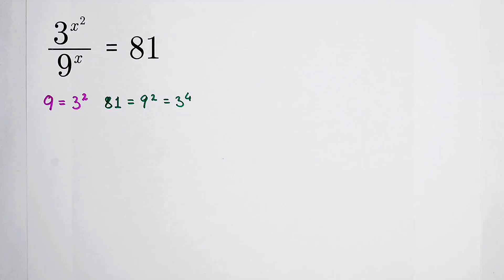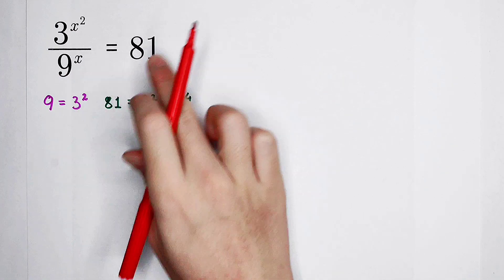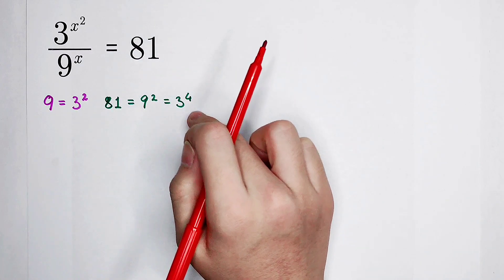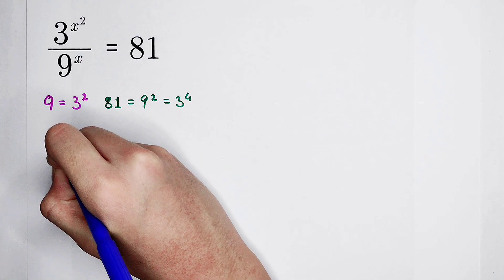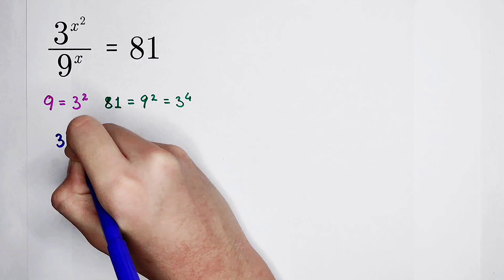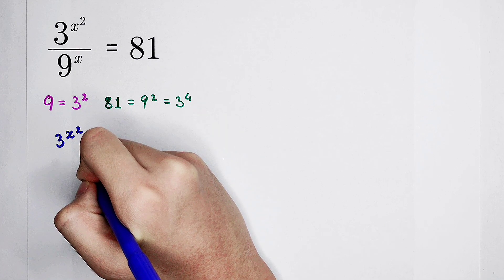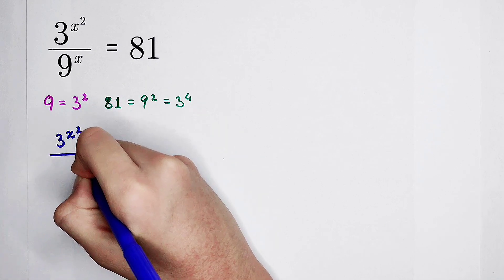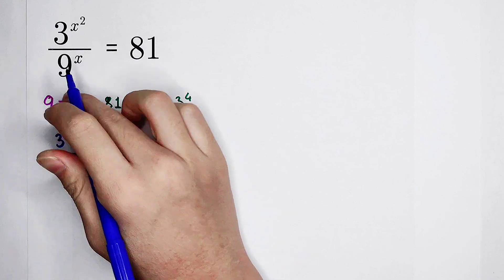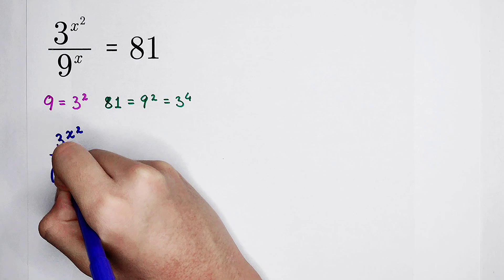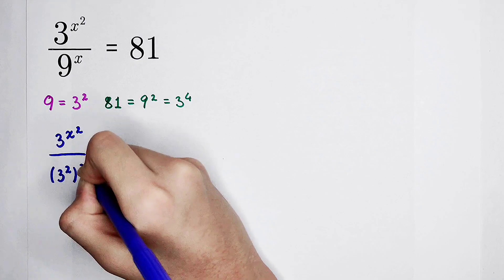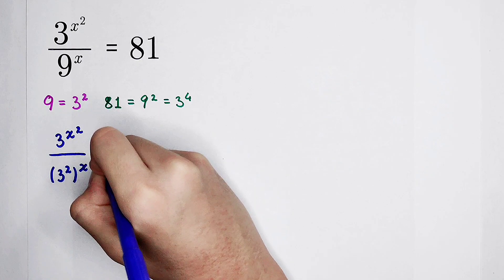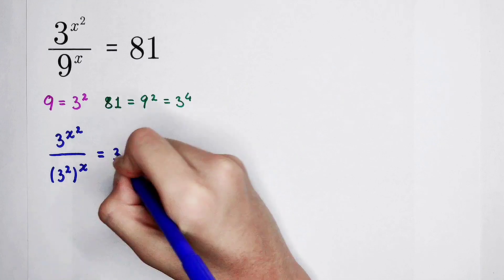The observation has succeeded. Now substitute: 9 as 3 squared, and 81 as 3 to the power of 4. The numerator is still 3 to the power of x squared. In the denominator, there is a change — the base is not 9 anymore, it is 3 squared, and the exponent is still x. On the right side, 81 is 3 to the power of 4.